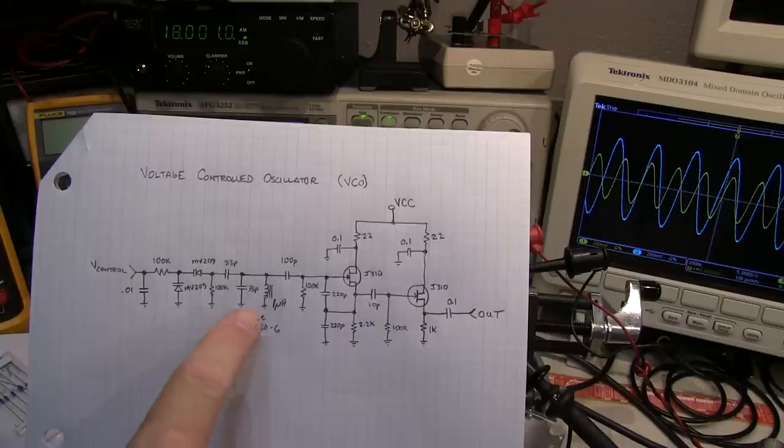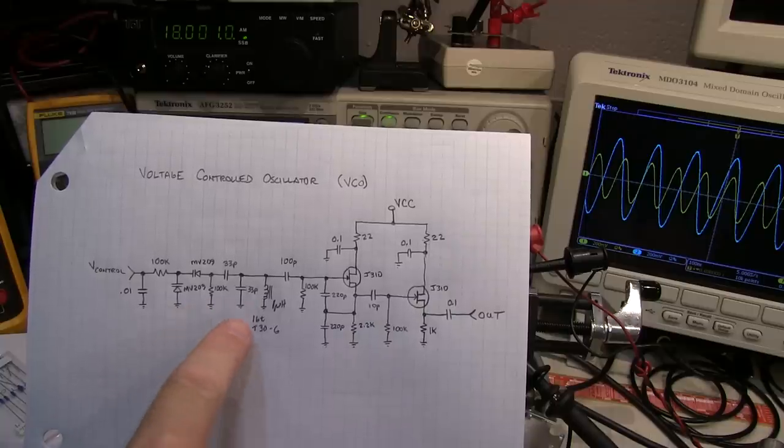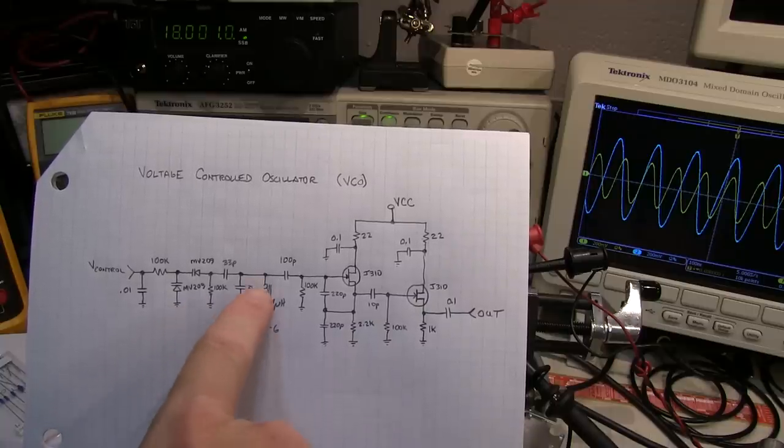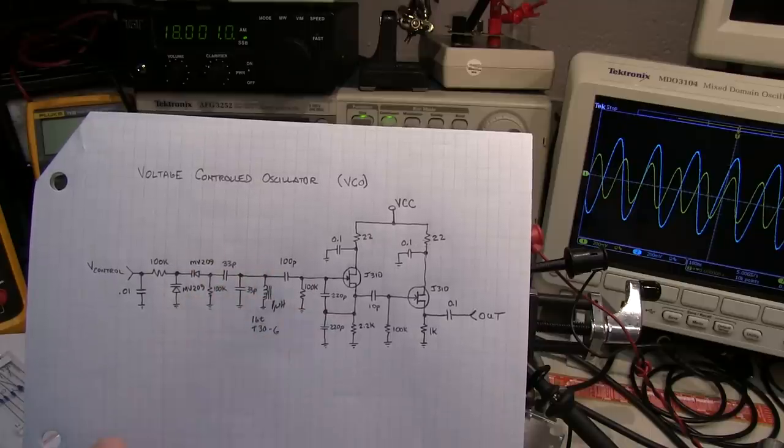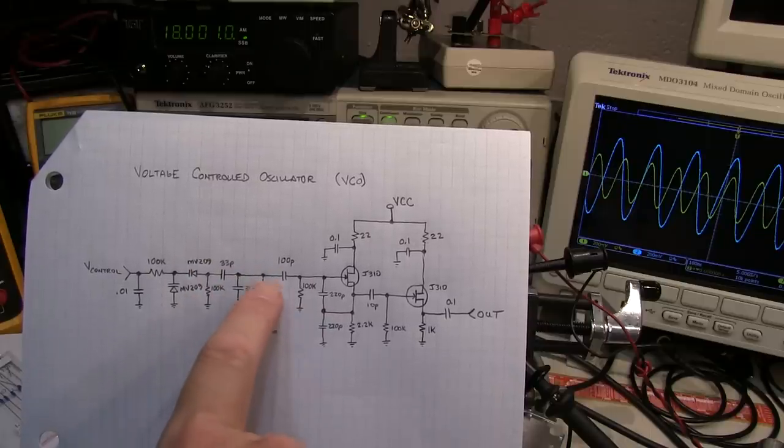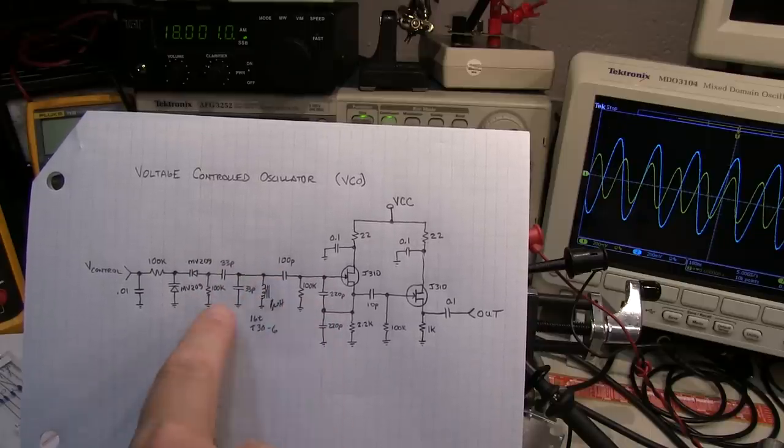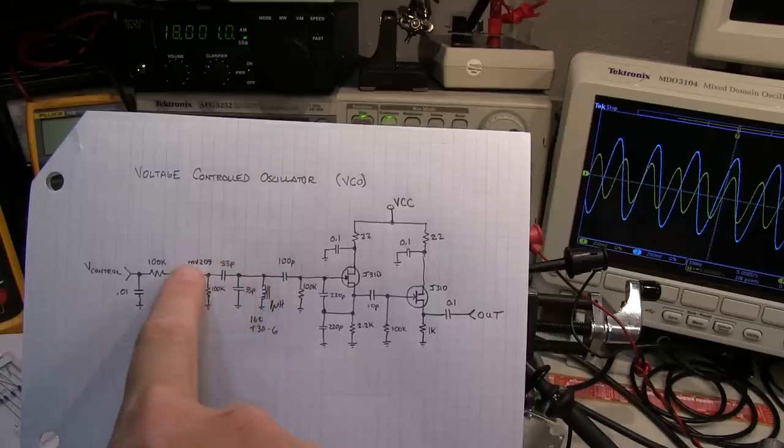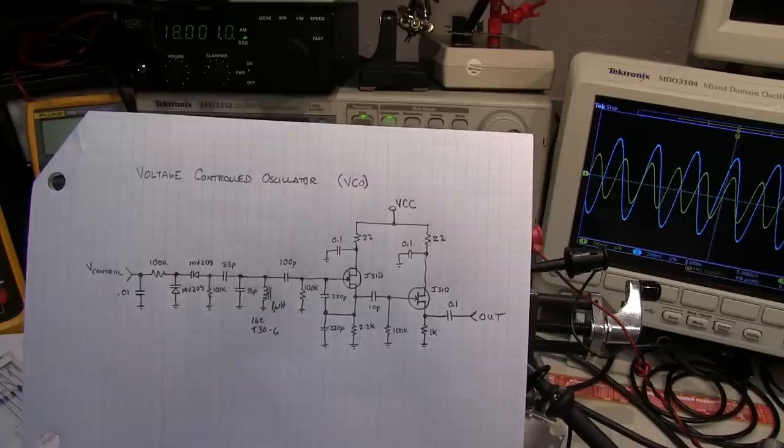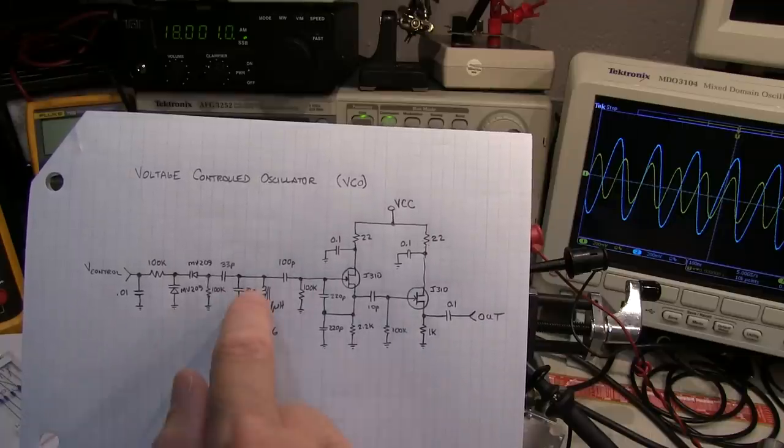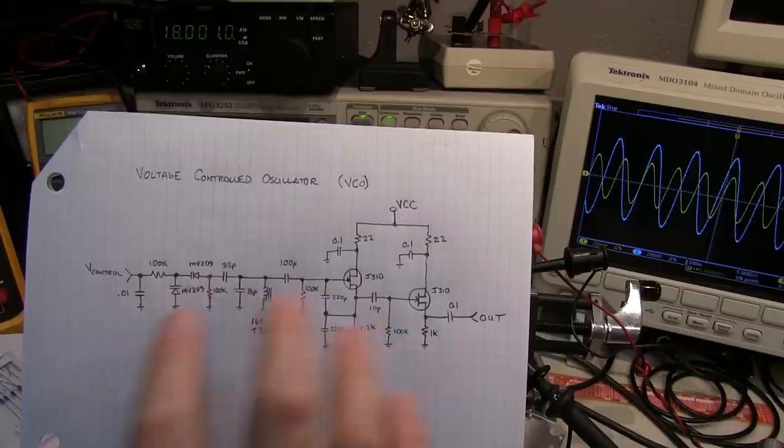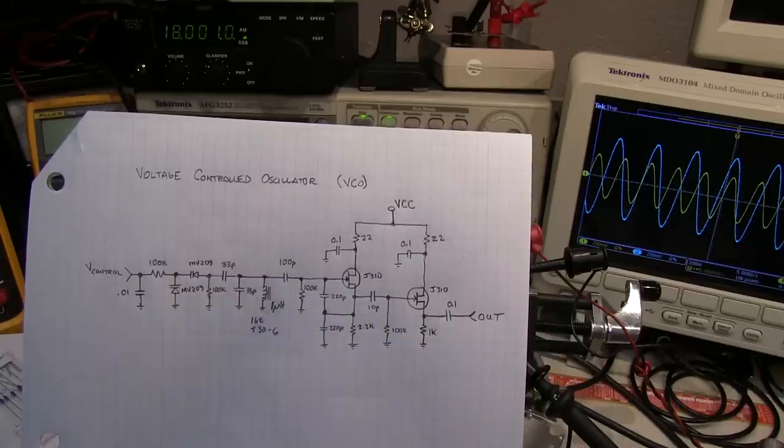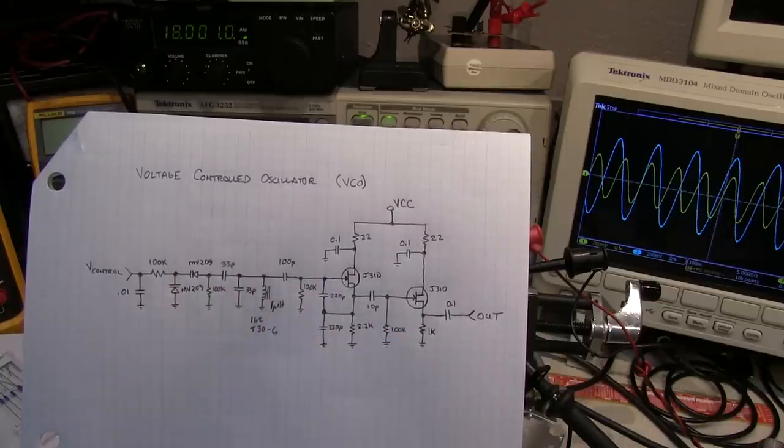Like most oscillators, the frequency of oscillation is determined primarily by this inductor and the capacitance that appears in parallel with it. That basically is these capacitors here, as well as this one and the combination of the varactors. Of course, any stray capacitance from the inductor itself to ground will add to the amount of capacitance there and alter the frequency of operation slightly.